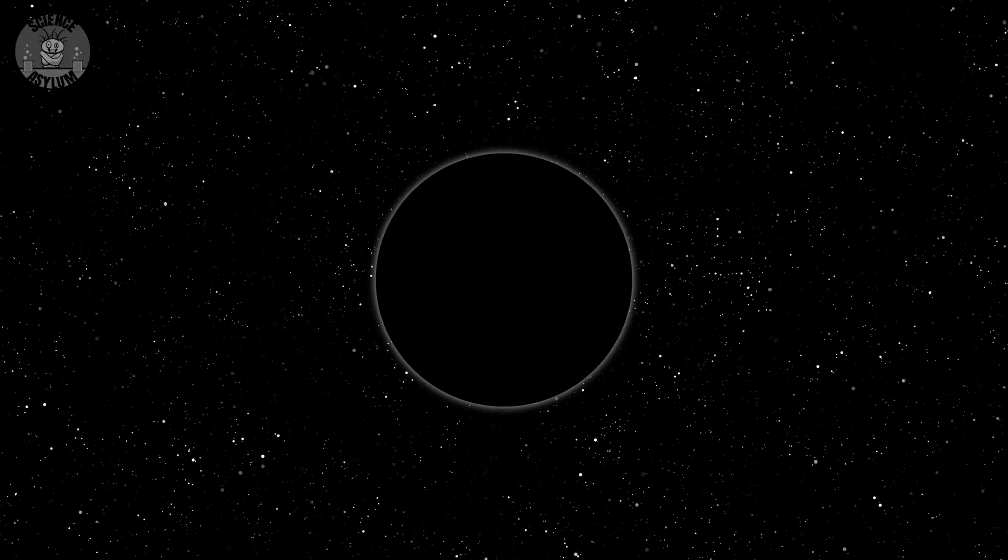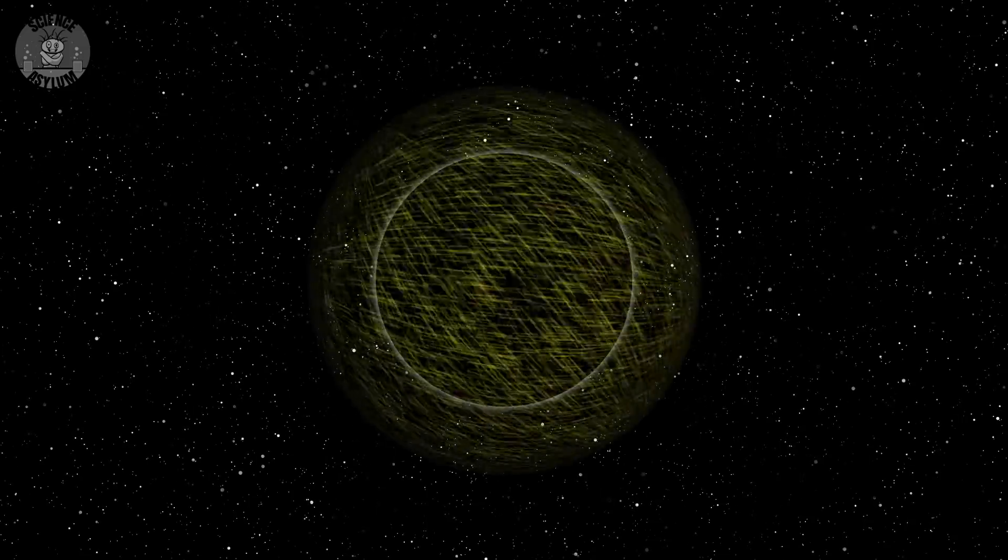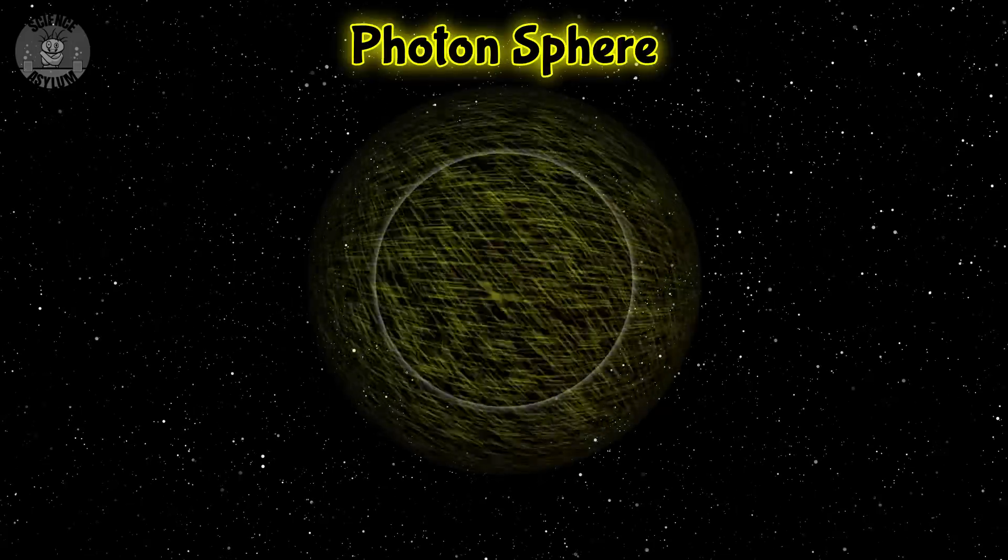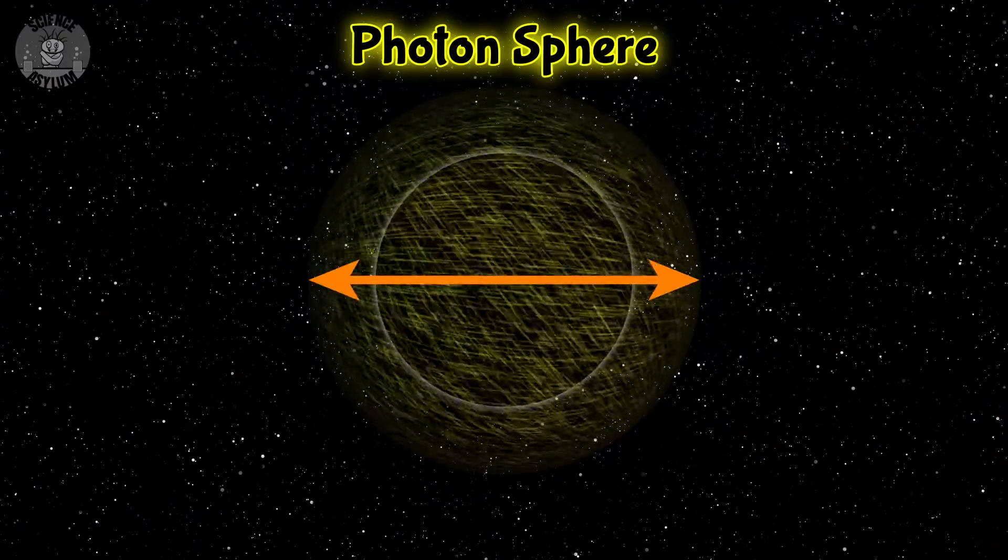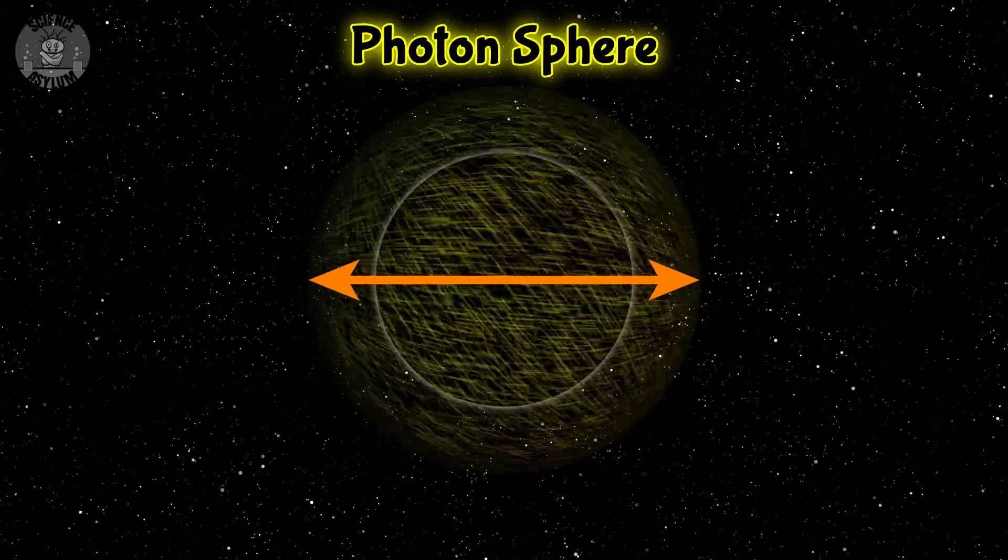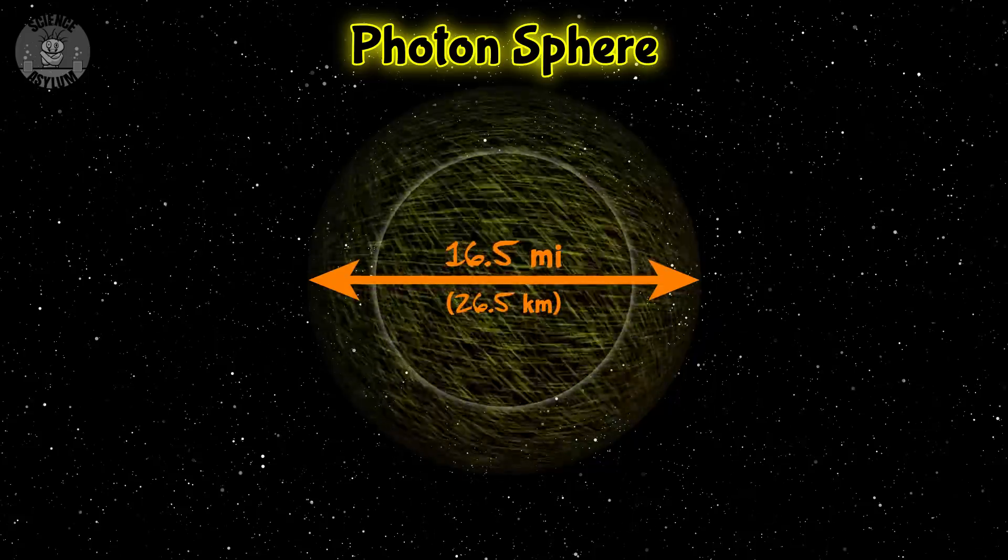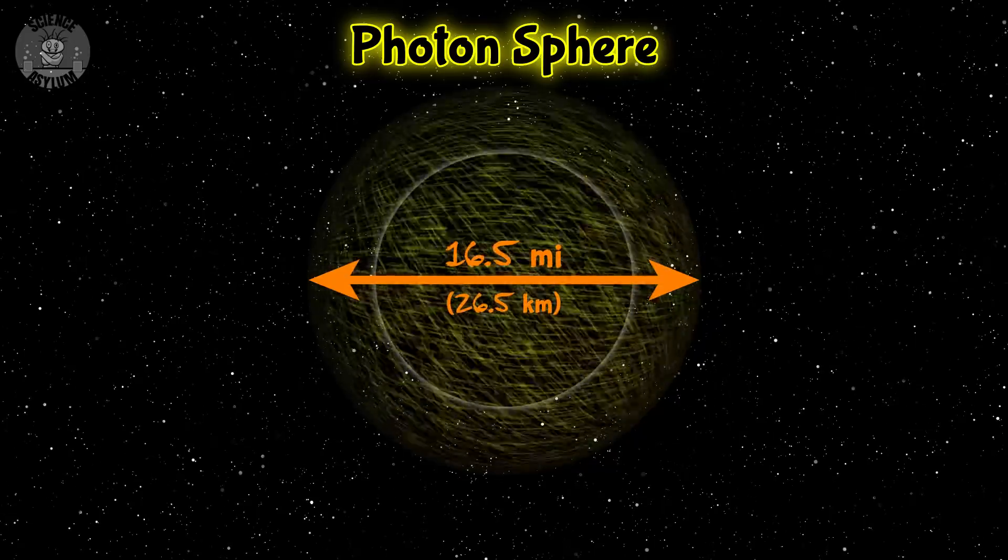Yeah, you heard me right. Light, that thing that always takes the straightest possible path through space-time, can orbit a black hole at this place. The diameter of this sphere is one and a half times the diameter of the event horizon. That's about 16 and a half miles across for our three solar mass black hole.